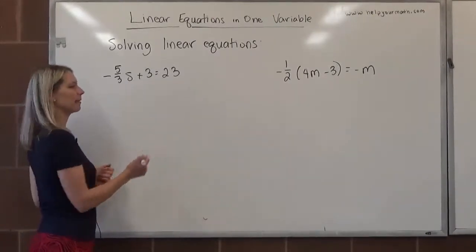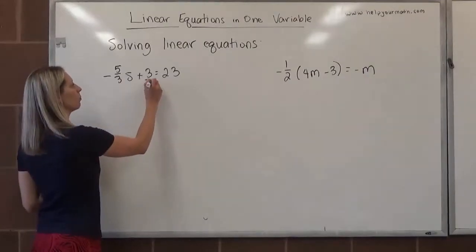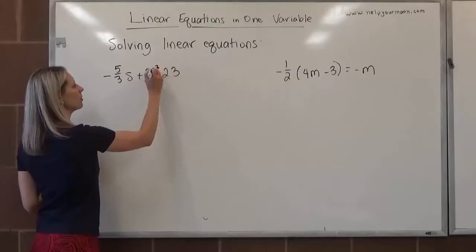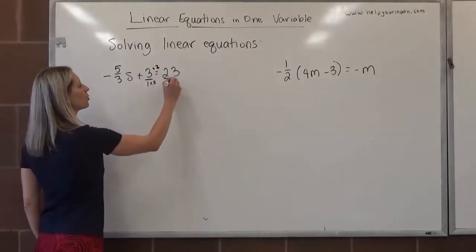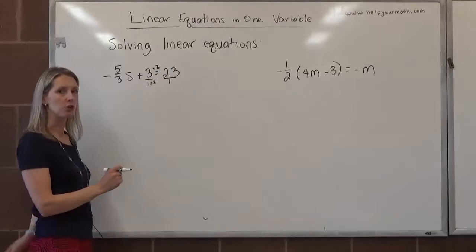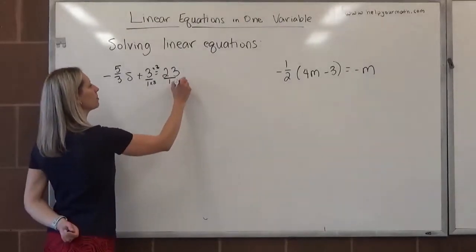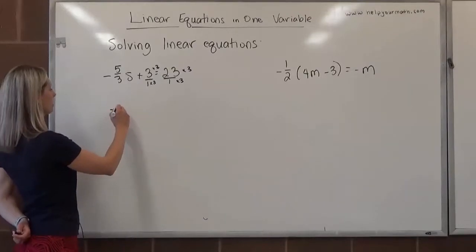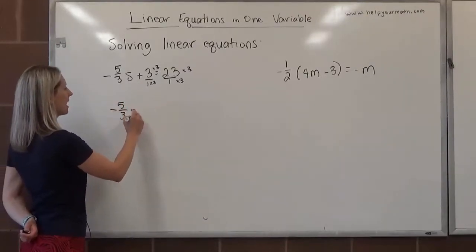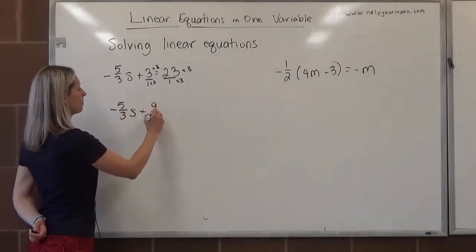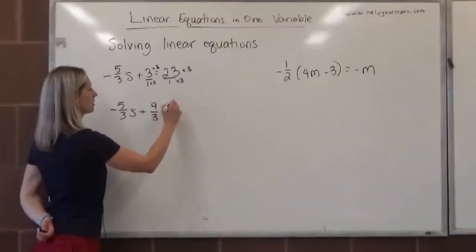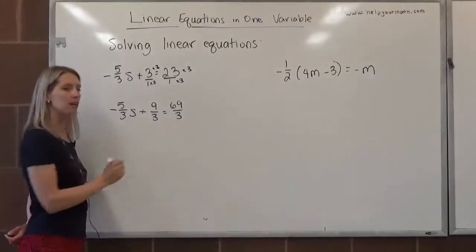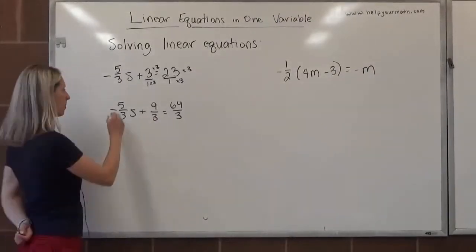Because we only have one denominator, that is the least common denominator. My goal here is to get every term to have a denominator of 3. This one's good to go. Here, I need a denominator of 3. It currently has a denominator of 1, so I would need to multiply by 3 over 3. Same thing with the 23. This gives me negative 5 over 3s plus 9 over 3 equals 69 over 3.